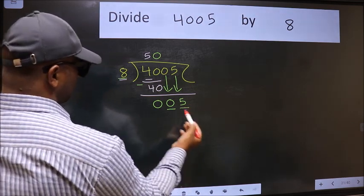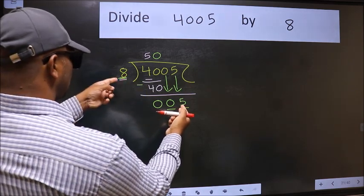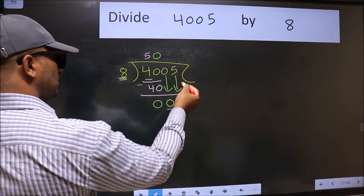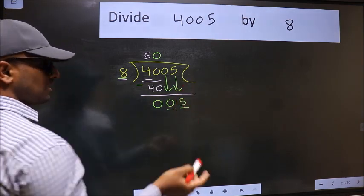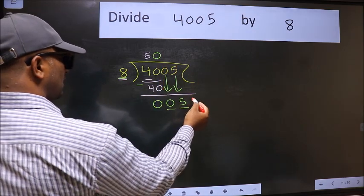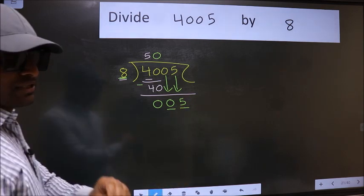Here we have 5 and here 8. 5 is smaller than 8. And we don't have any more numbers to bring it down. So what many do is they directly put dot take 0, which is wrong.